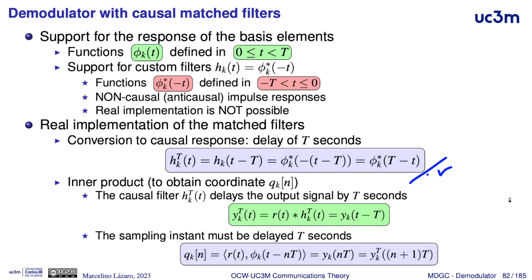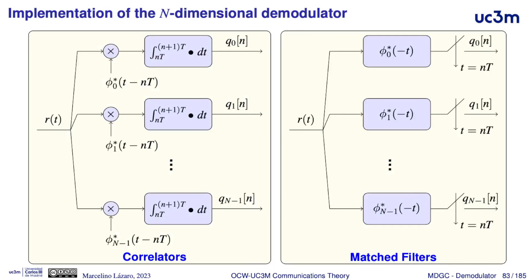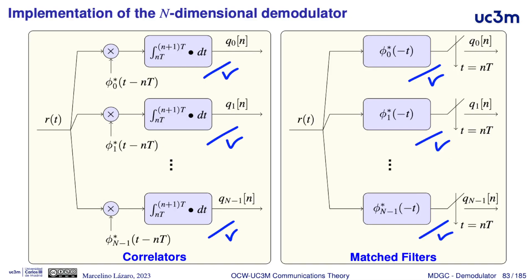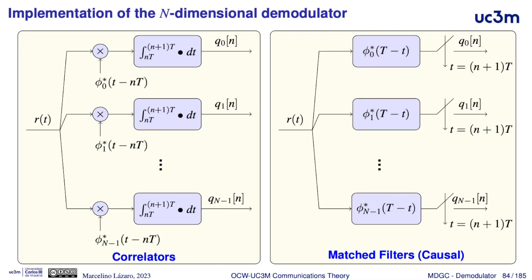This is the implementation of a demodulator with causal matched filters: we filter the received signal with a matched filter and sample the output at the end of the symbol interval. The block diagram for an n-dimensional signal space uses either a bank of correlators — one correlator per element of the orthonormal basis — or a bank of matched filters for every element in the orthonormal basis. In a practical implementation these filters must be causal, meaning the sampling instant is delayed to the end of the symbol interval.